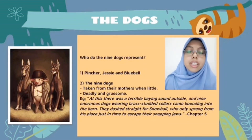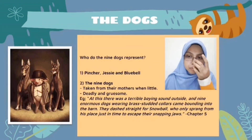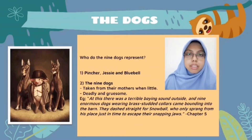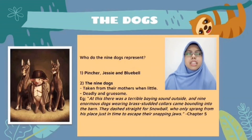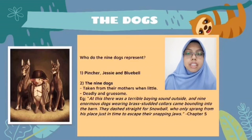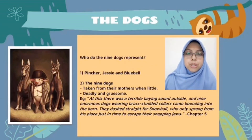The nine dogs actually represent the KGB. The KGB allowed Stalin — or in the story's case, Napoleon — to stay in power by implanting fear into animals and people. It is important to know that when Orwell was writing this, he had Nazi Germany under Hitler and the Soviet Union in mind. That's all from me, thank you. I will be handing this presentation to the next presenter.